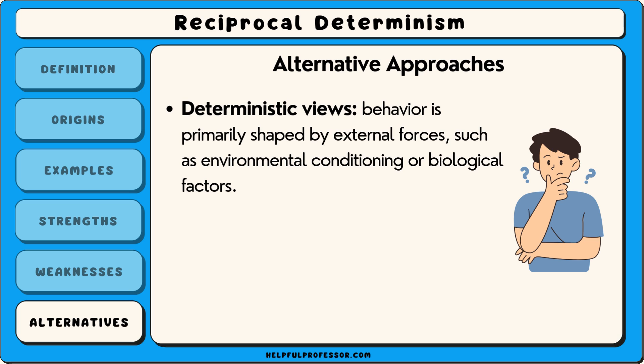Alternatives to reciprocal determinism include more traditional deterministic views, which argue that behaviour is primarily shaped by external forces, such as environmental conditioning or biological factors. For example, behaviourism — a school of thought developed by psychologists like B.F. Skinner — emphasises that behaviour is the result of environmental conditioning through rewards and punishments, without much consideration for internal thought processes.